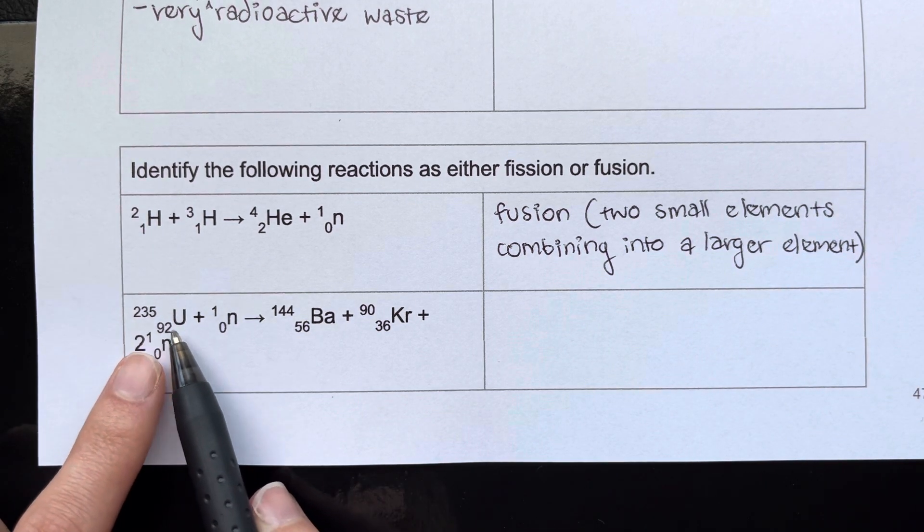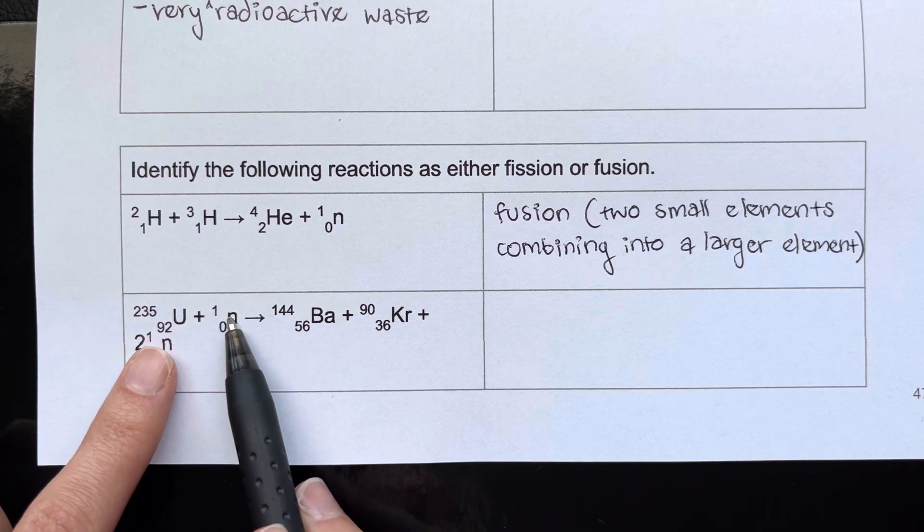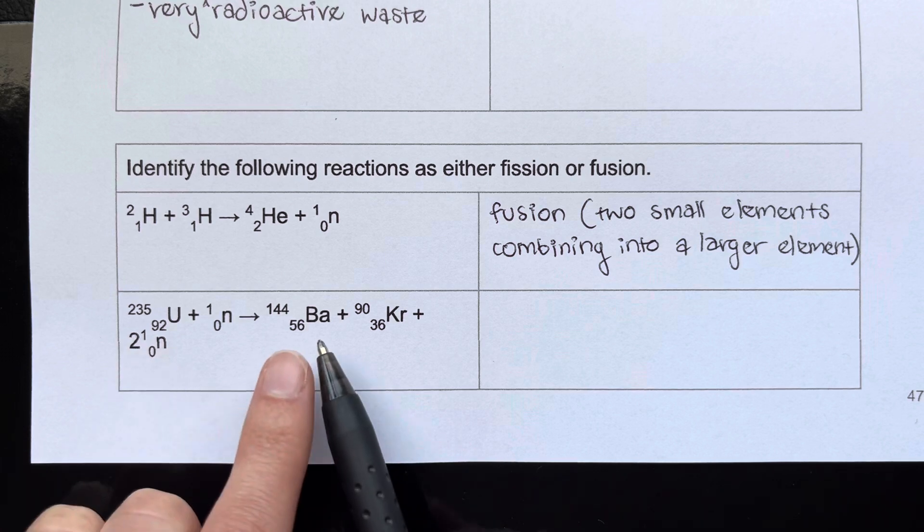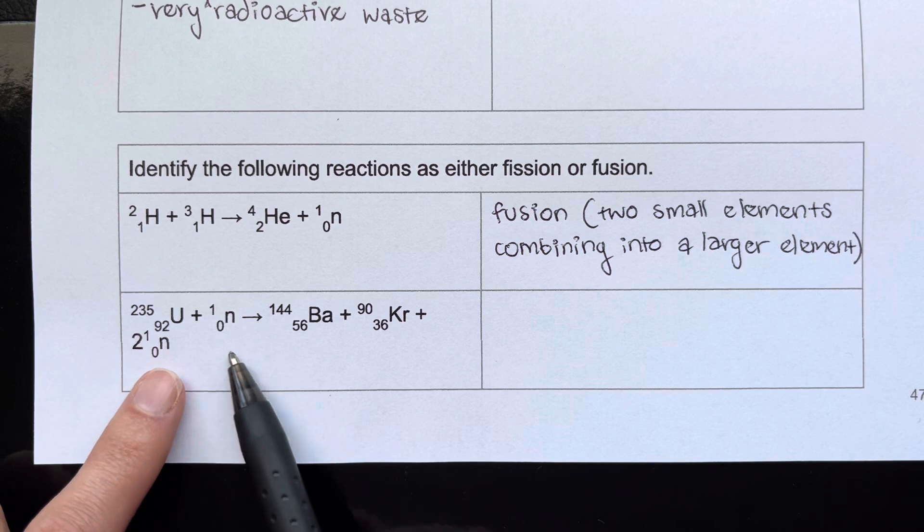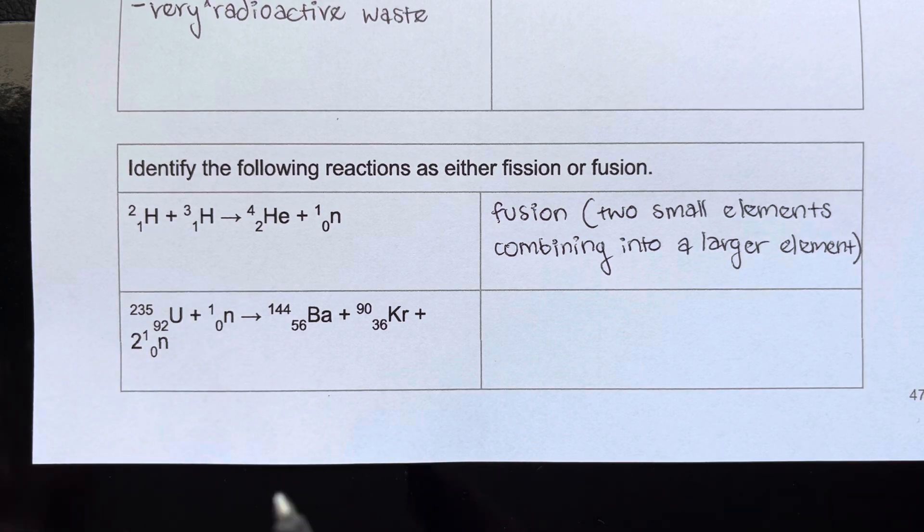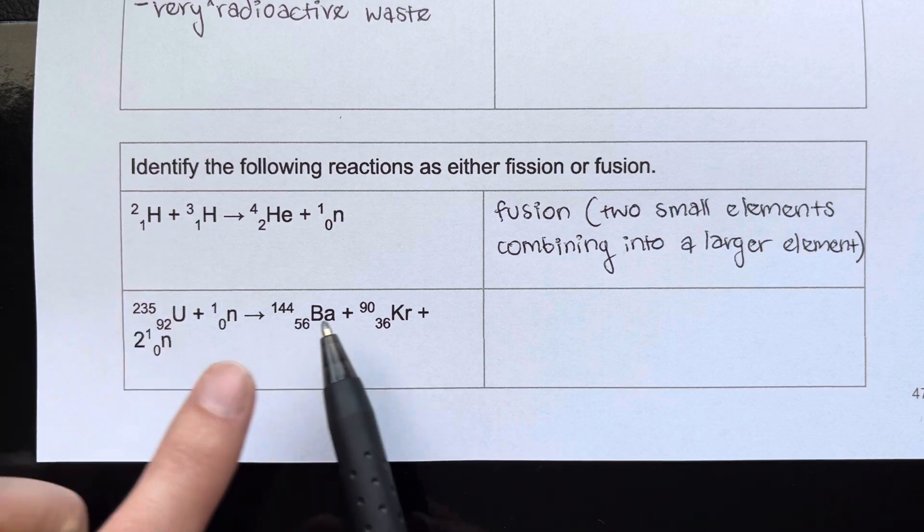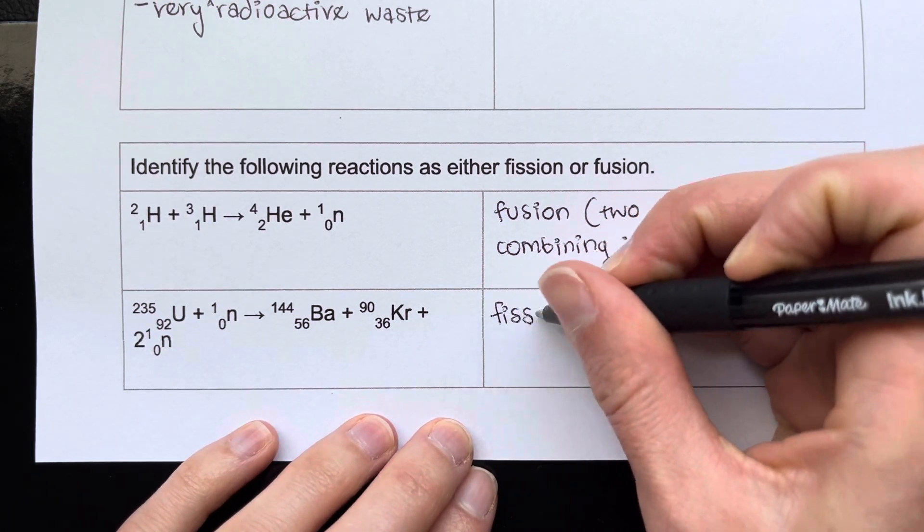This reaction, we've got uranium getting hit with an accelerated neutron, which we talked about. And then when that happens, it ends up forming two elements, barium and krypton, and some more neutrons that can go and hit more uranium atoms and create a chain reaction eventually. So this is obviously fission. We've got a big element and it's breaking into two smaller elements. So this is fission.